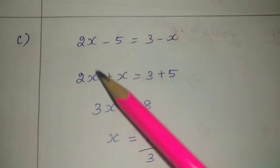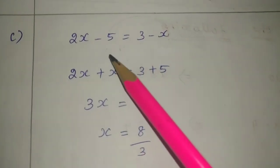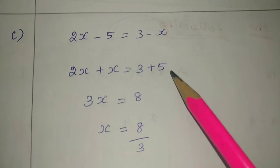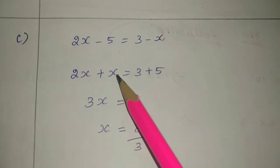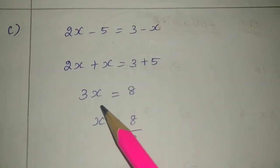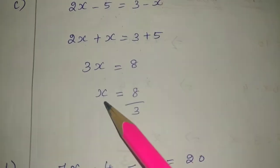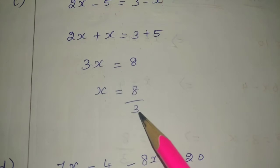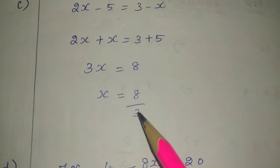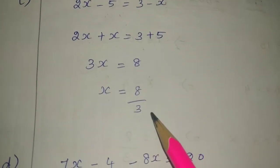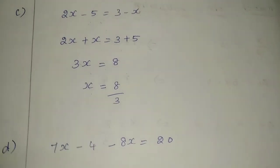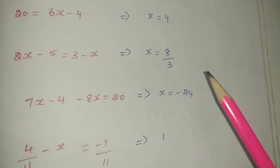Like terms: 3x equals 5 plus 3, which is 8. If multiplication transposes, it becomes division. So 8 by 3. x equals 8 by 3. The c value equals 8 by 3.